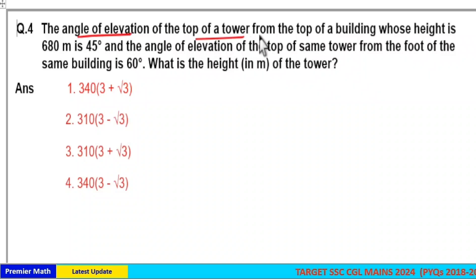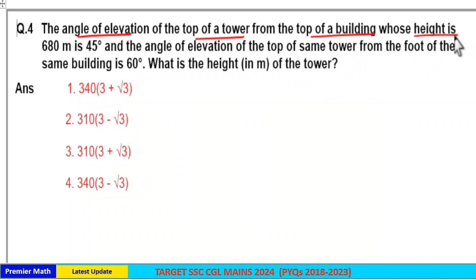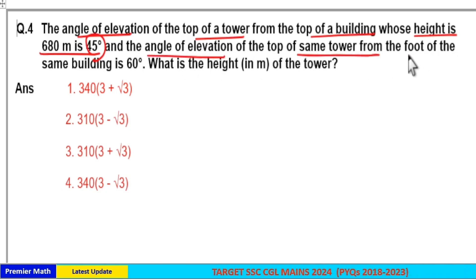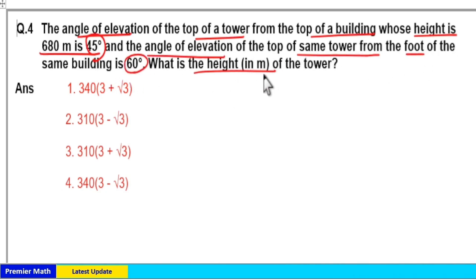The angle of elevation of the top of a tower from the top of a building whose height is 680 meters is 45 degrees, and the angle of elevation of the top of the same tower from the foot of the same building is 60 degrees. What is the height of the tower?